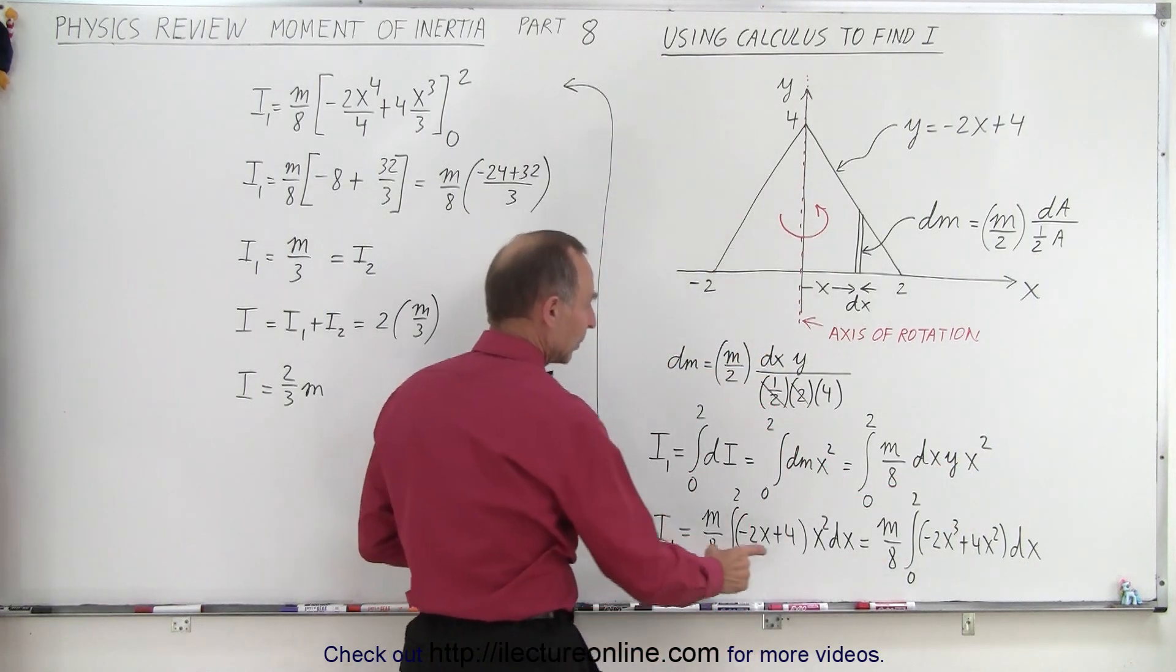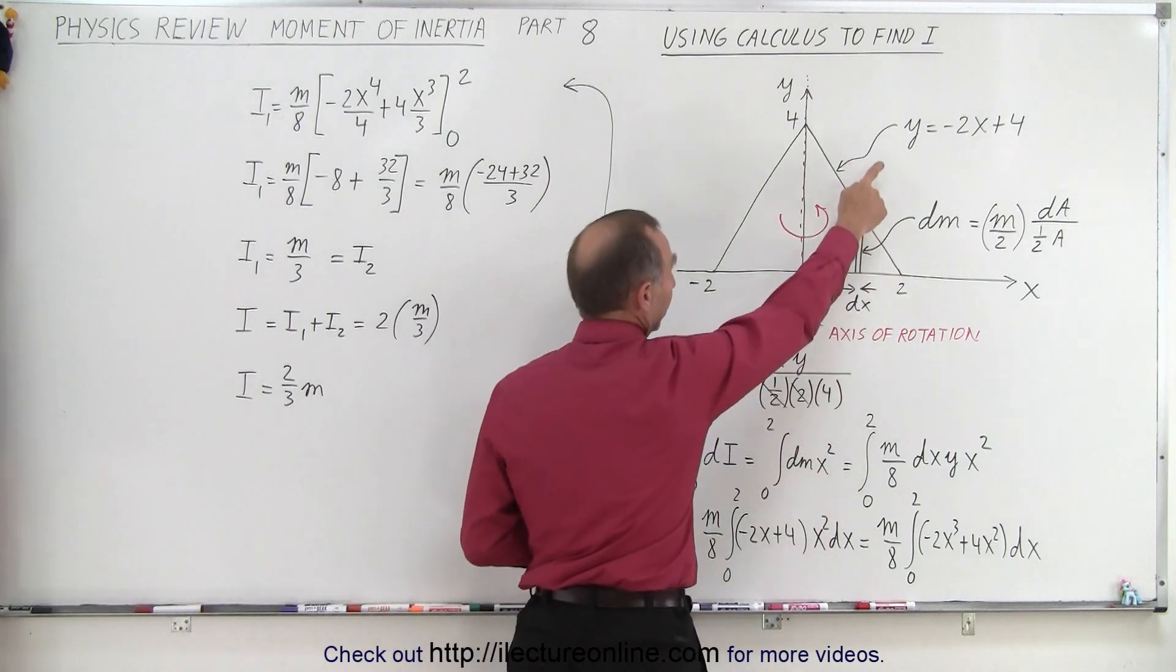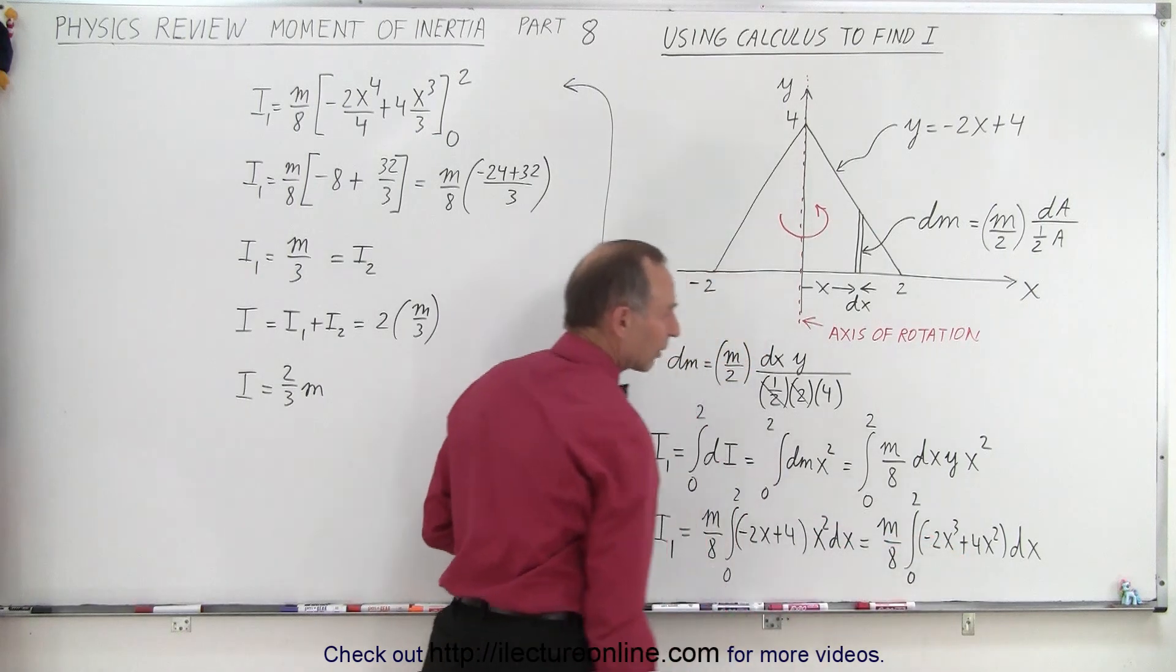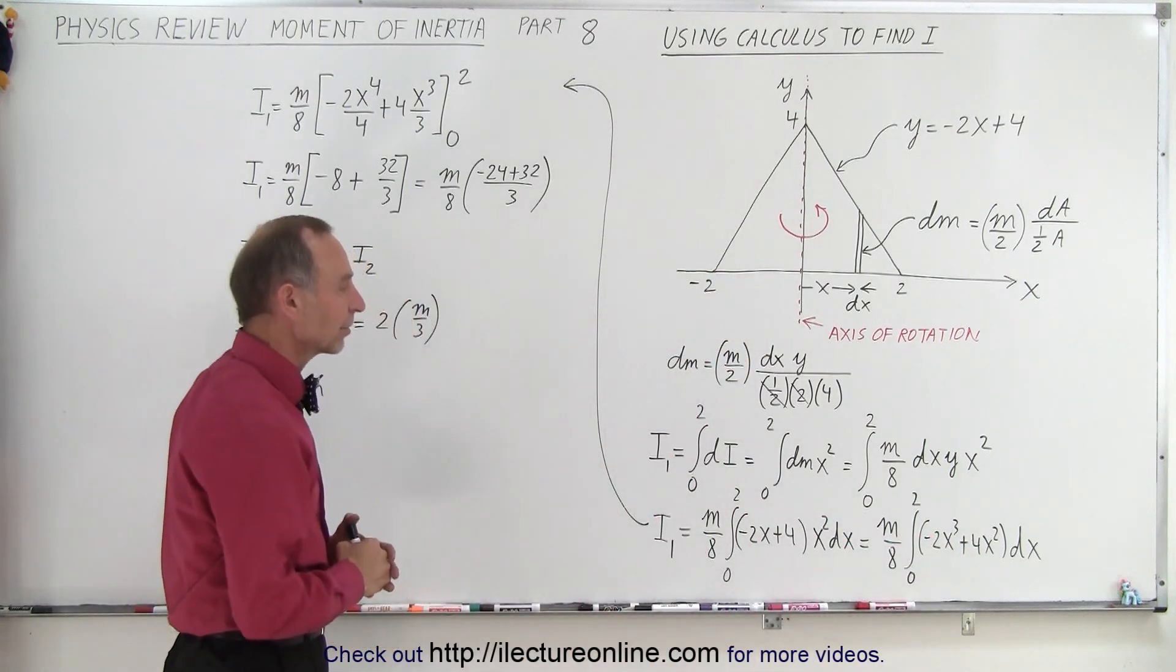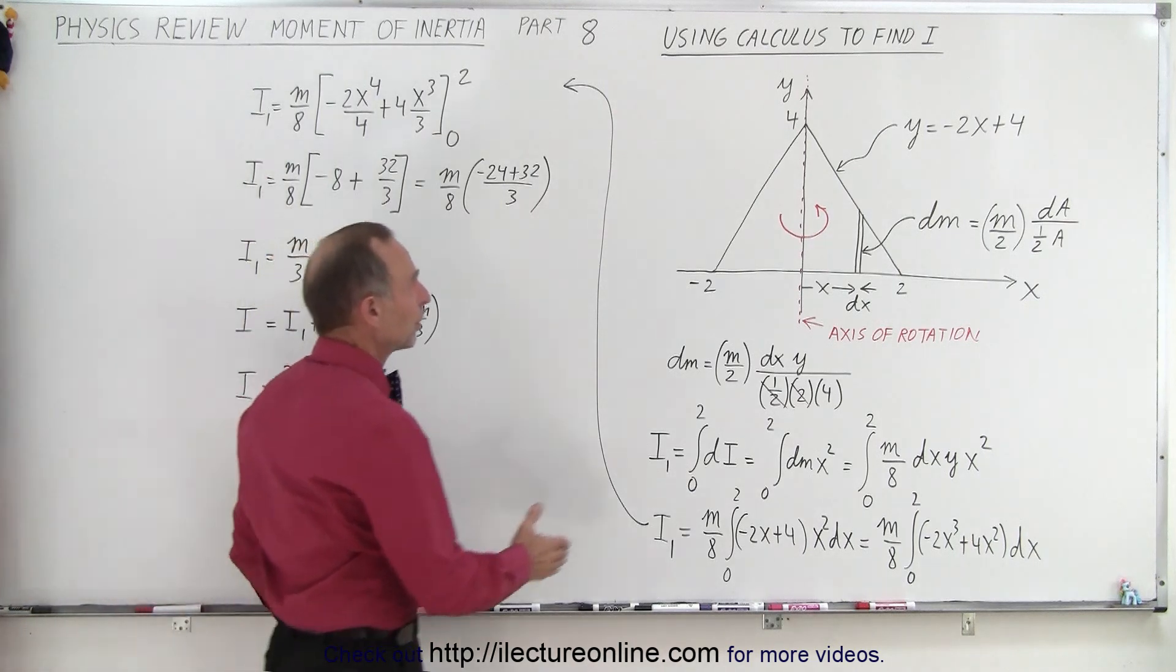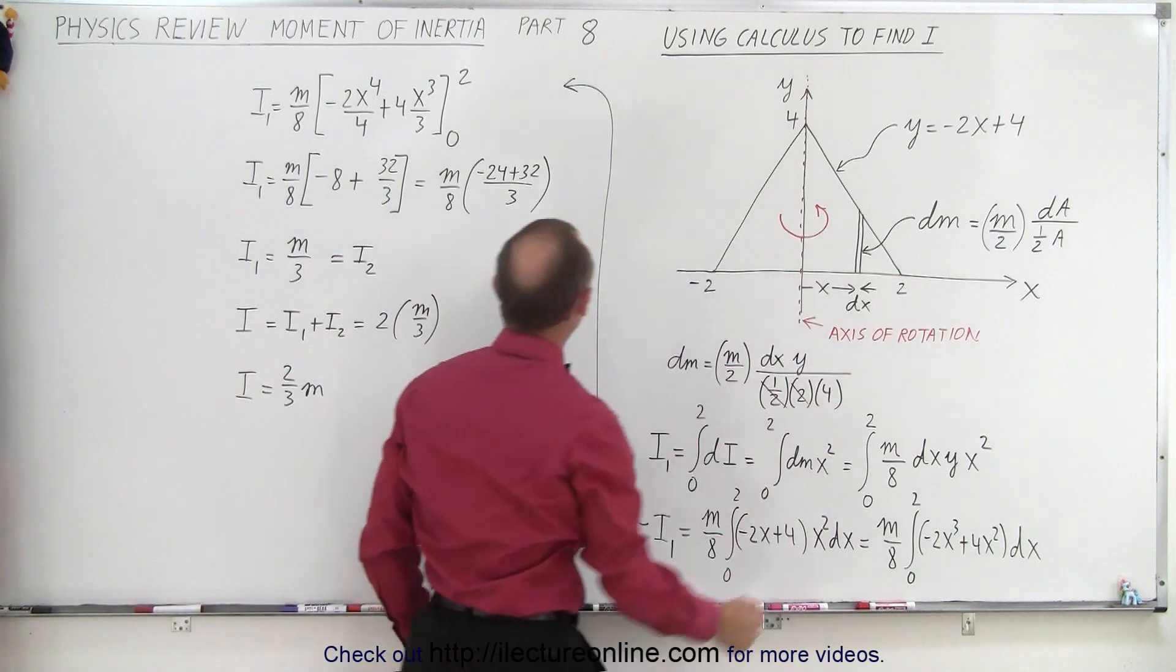So the y can then be converted to minus 2x plus 4 from the equation of this line. We have the x squared dx, which then becomes minus 2x cubed plus 4x squared times dx. We can integrate that, we plug in the limits, the limits will be from x equals 0 to x equals 2.